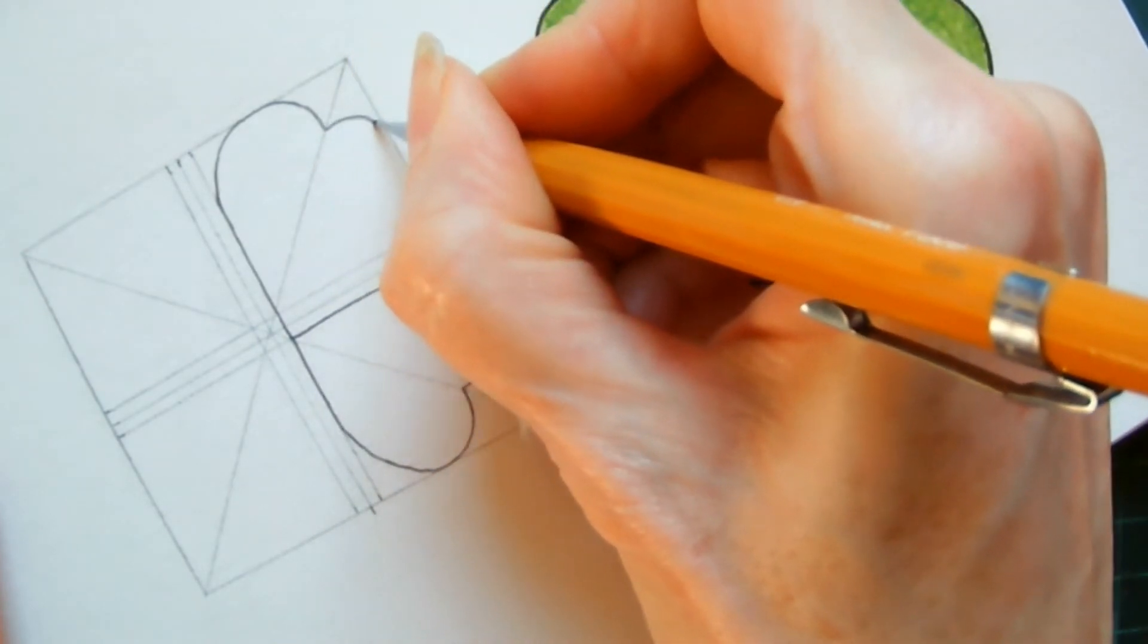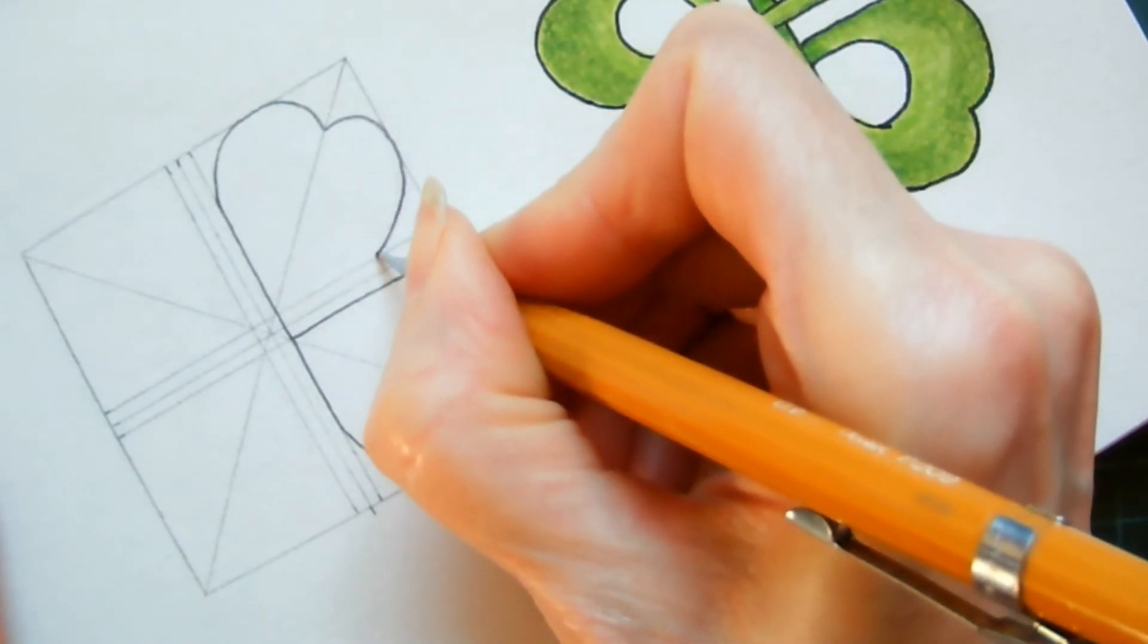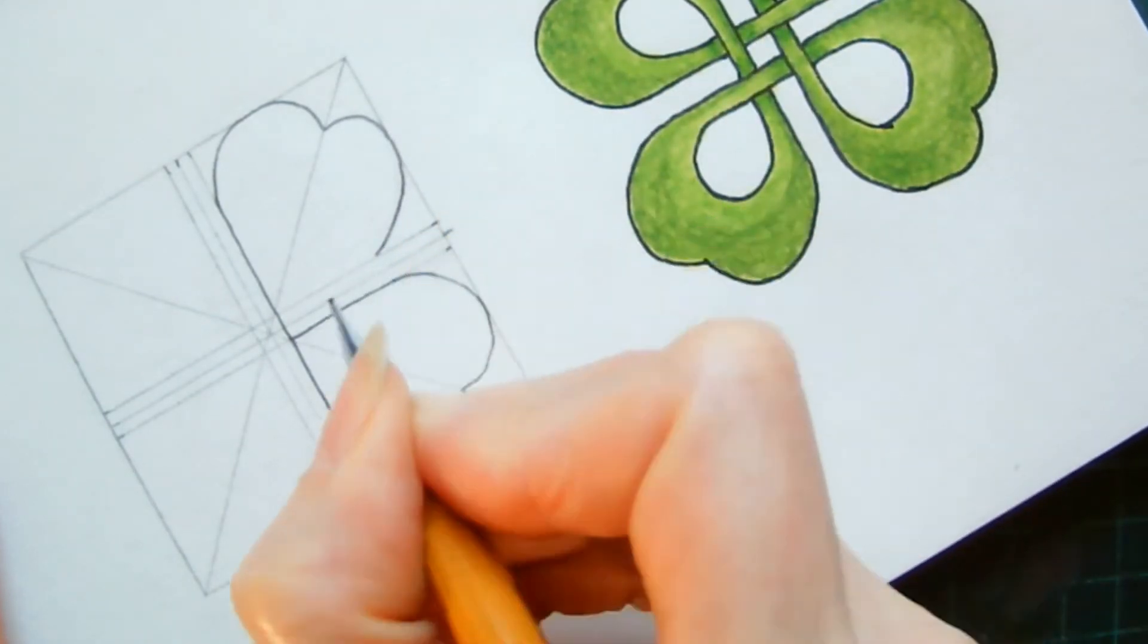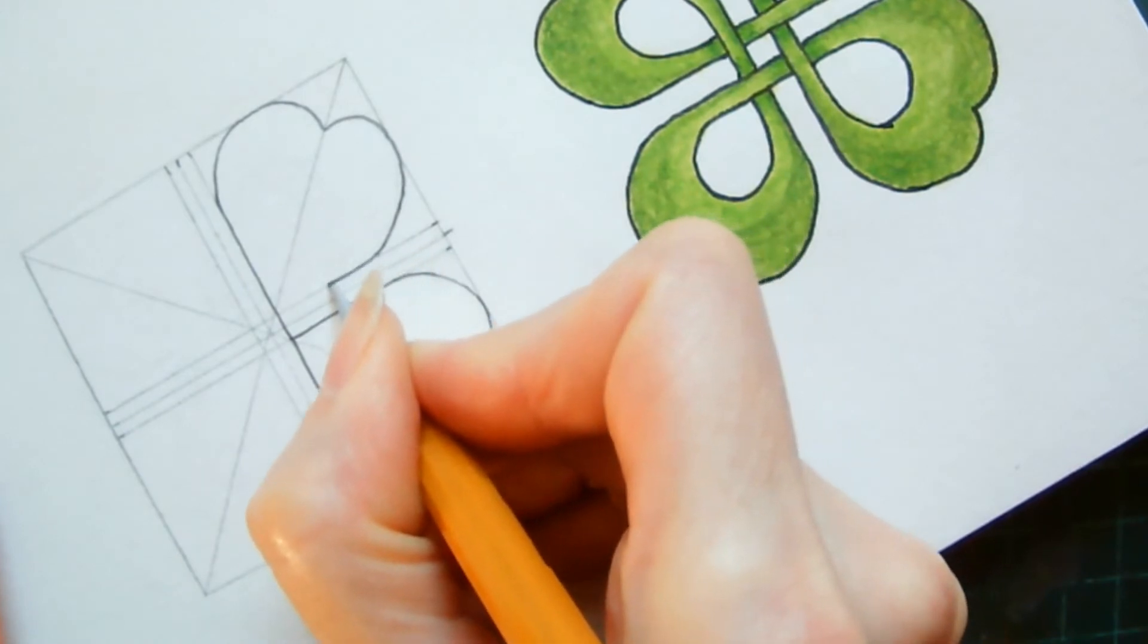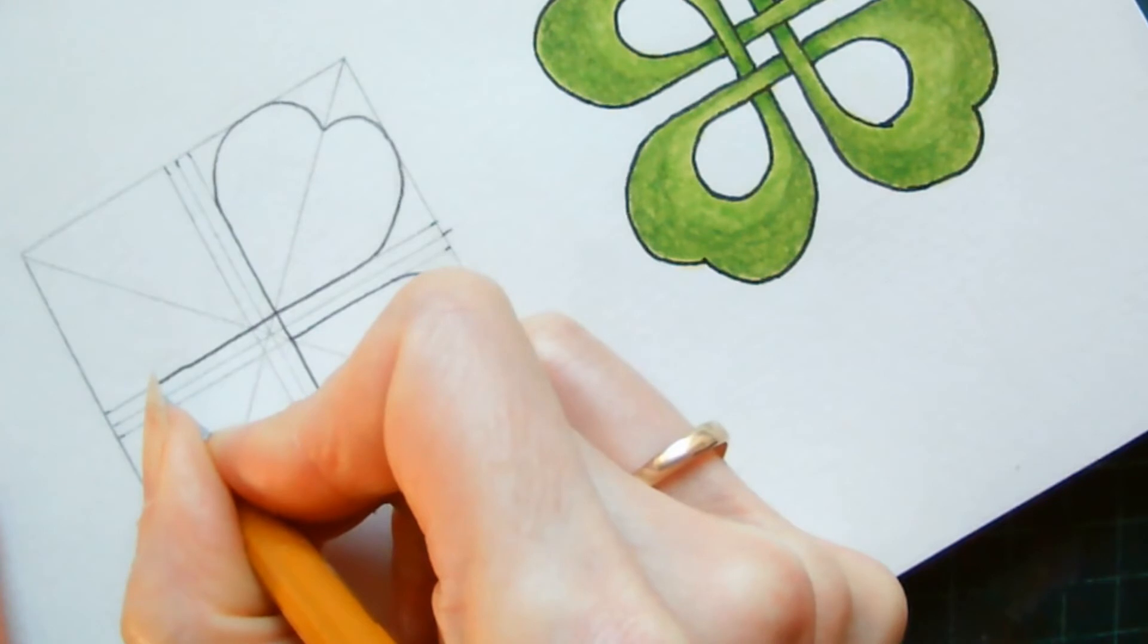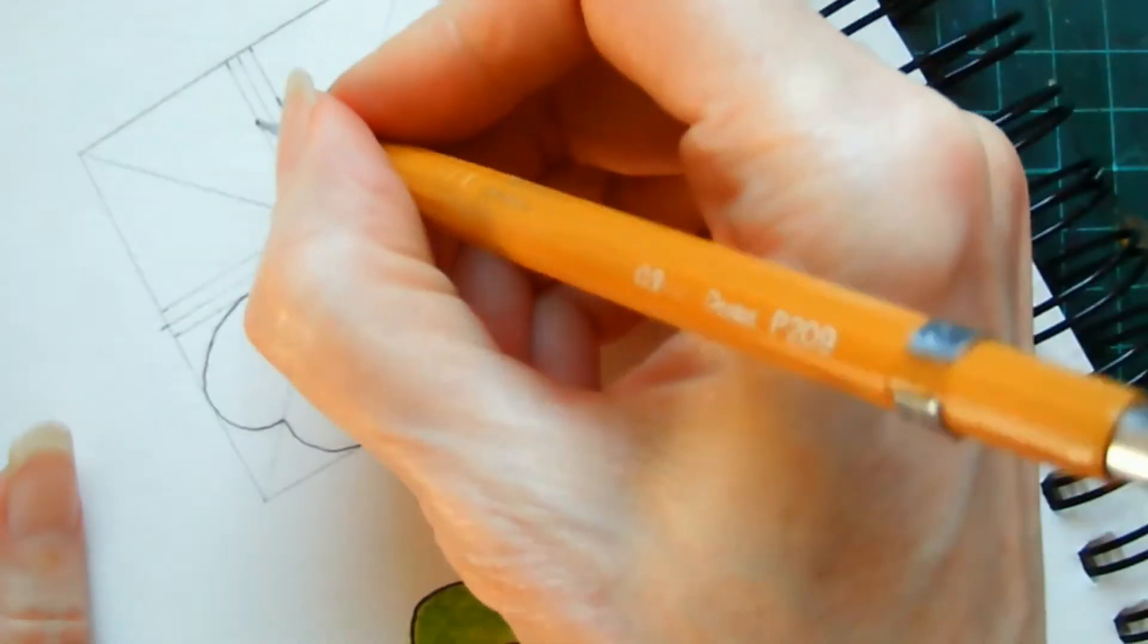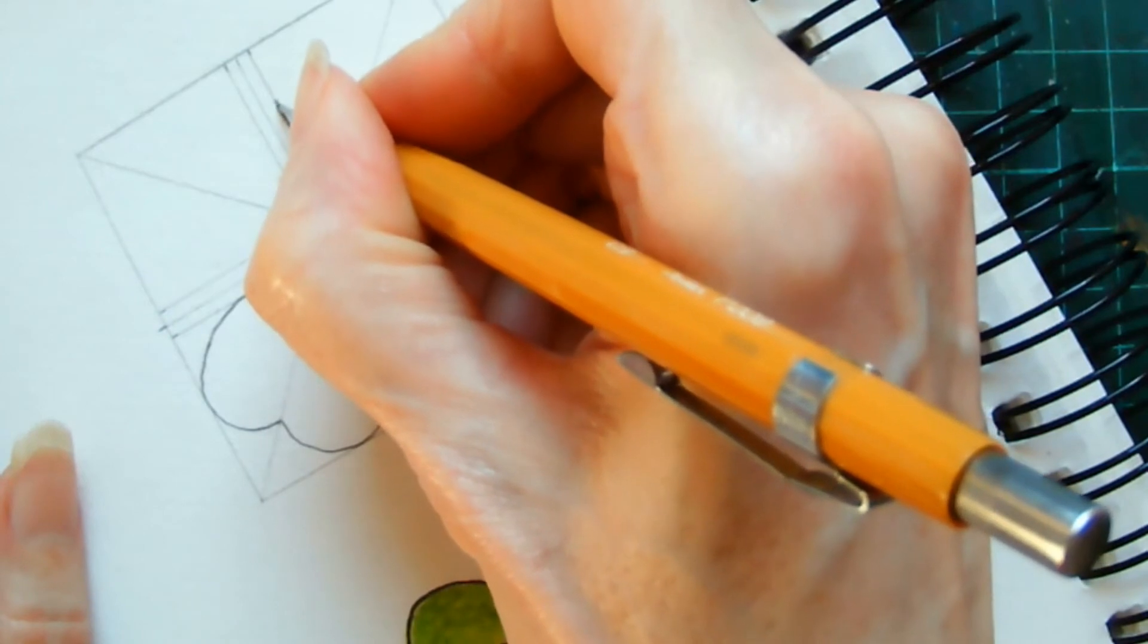Back up to the outer edge, curve back around hitting this guideline now. And now you follow that guideline all the way along into the next square and stop just over two thirds of the way, and repeat.